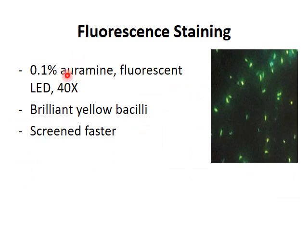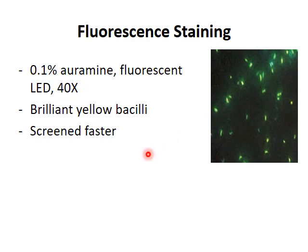The other staining available is fluorescent staining, wherein 0.1% auramine is used. We can see brilliant yellow bacilli against a dark background. One advantage of fluorescent staining over ZN staining is that it is screened faster, as it is observed at 40x.